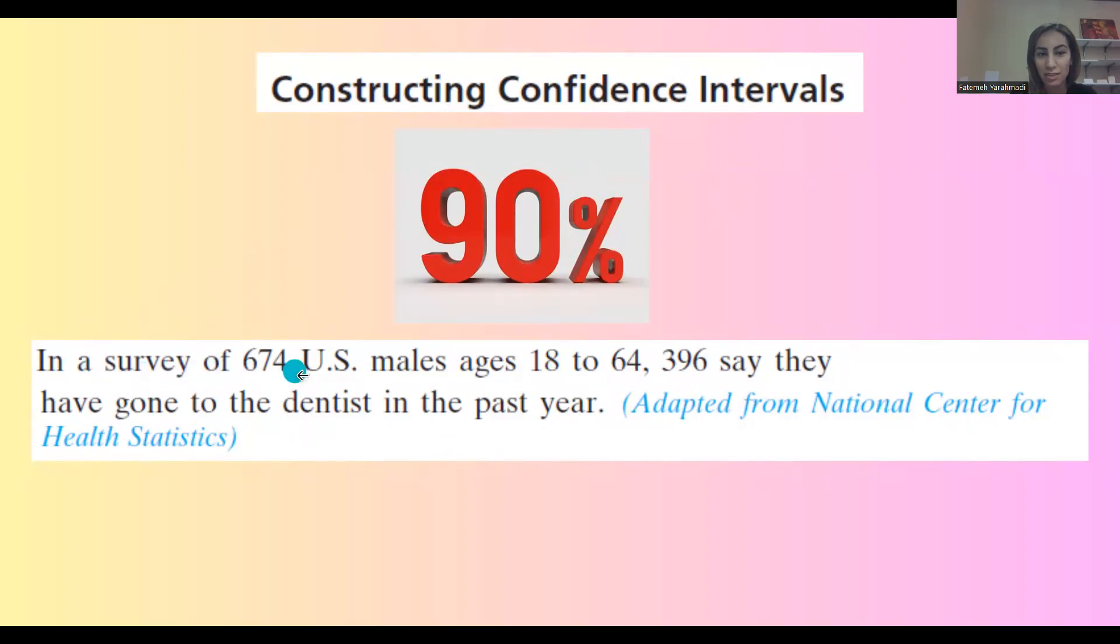You have a survey of 674 U.S. adults. 396 said yes, they went to the dentist last year. How do we construct a 90% confidence interval here?